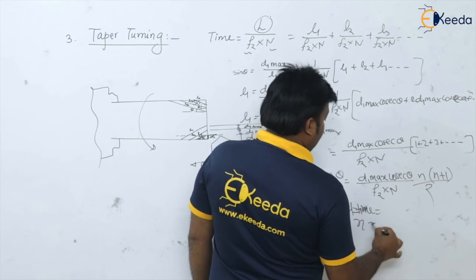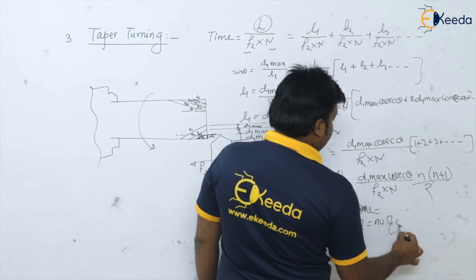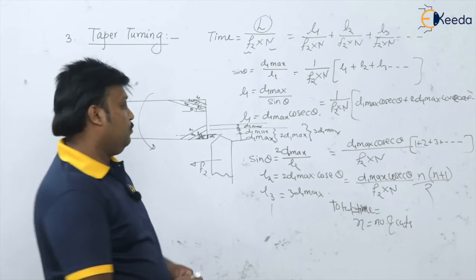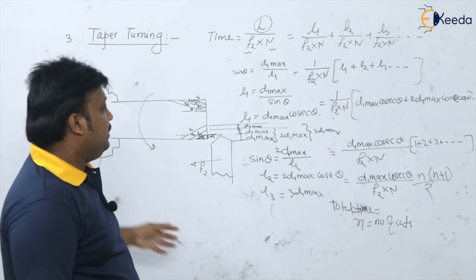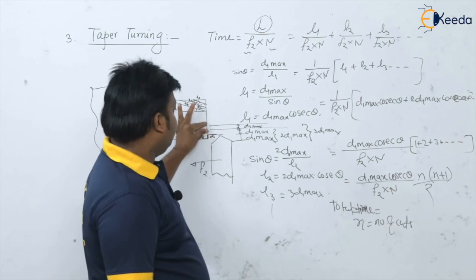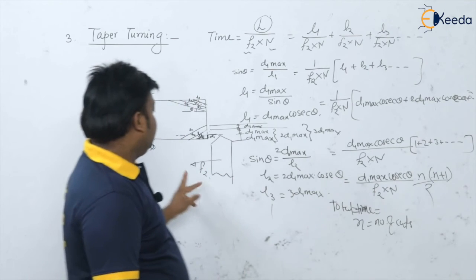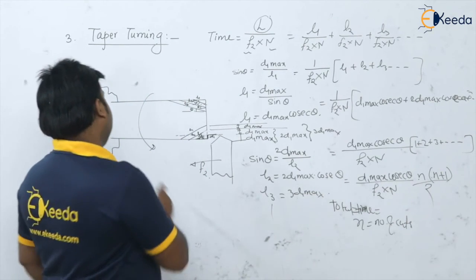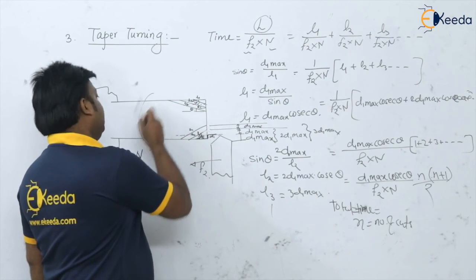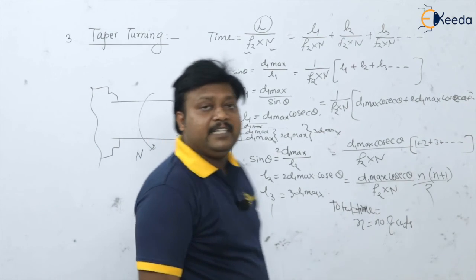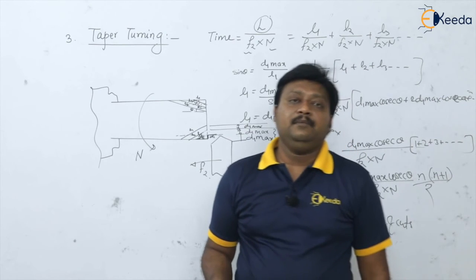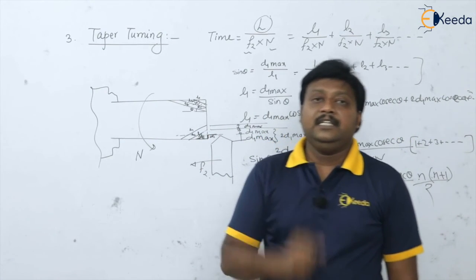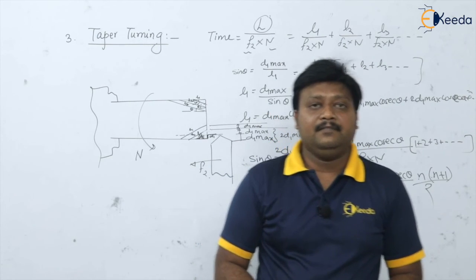So the total time required for the taper turning operation is: total time = [d1_max × cosec(theta) × n(n+1)/2] / (f2 × N), where n is the number of cuts, d1_max is the depth of cut per pass, f2 is the feed in mm per revolution, and N is the RPM of the spindle. In this way we can calculate the machining time for the taper turning operation on the lathe machine.